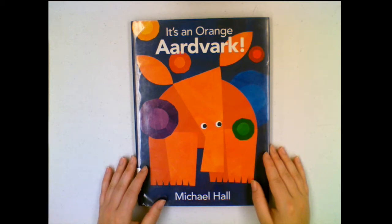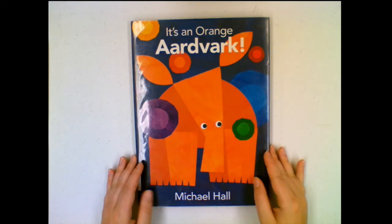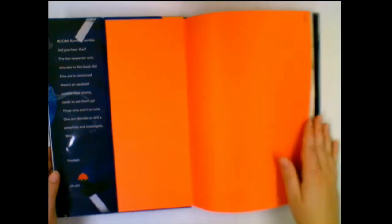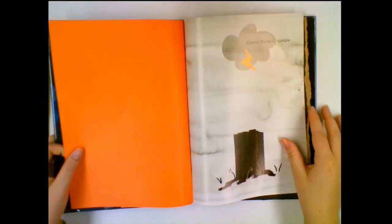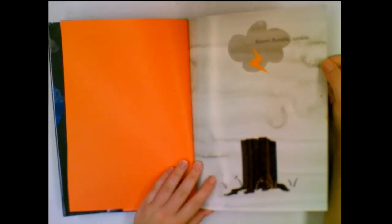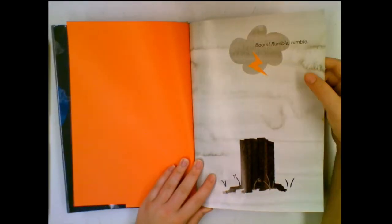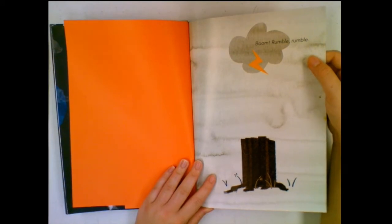It's an Orange Aardvark by Michael Hall. Boom! Rumble, rumble! There's a storm coming.